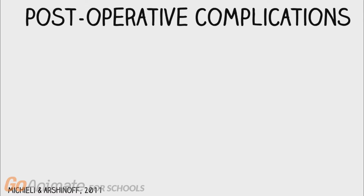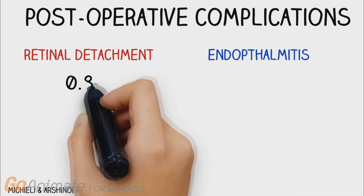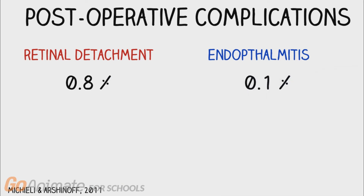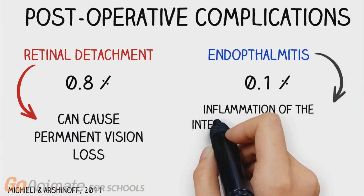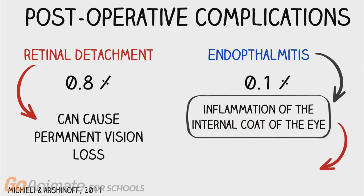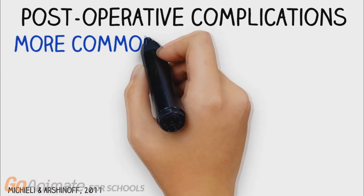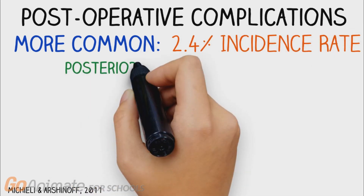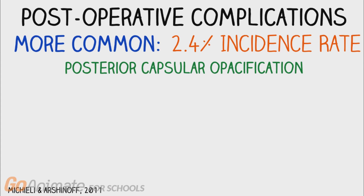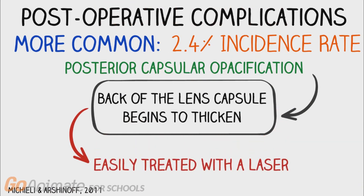Serious complications such as retinal detachment and endophthalmitis are very uncommon, with an occurrence of about 0.8% and 0.1% respectively. If retinal detachment is not properly treated, it can cause permanent vision loss. Endophthalmitis, which is the inflammation of the internal coat of the eye, can also lead to decreased or permanent loss of vision. One of the more common post-operative complications, with an incidence of about 2.4%, is posterior capsular opacification. In this situation, the back of the lens capsule begins to thicken; however, it can be easily treated with a laser.